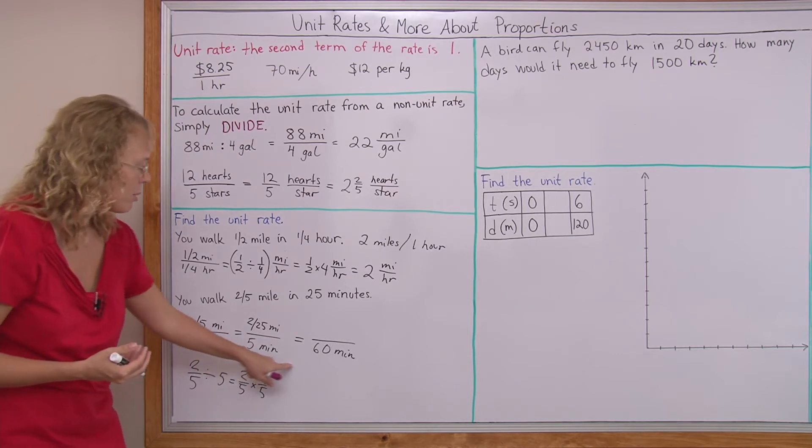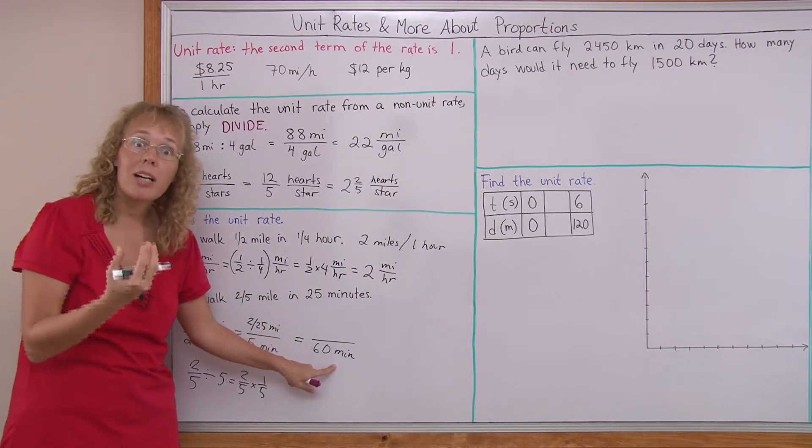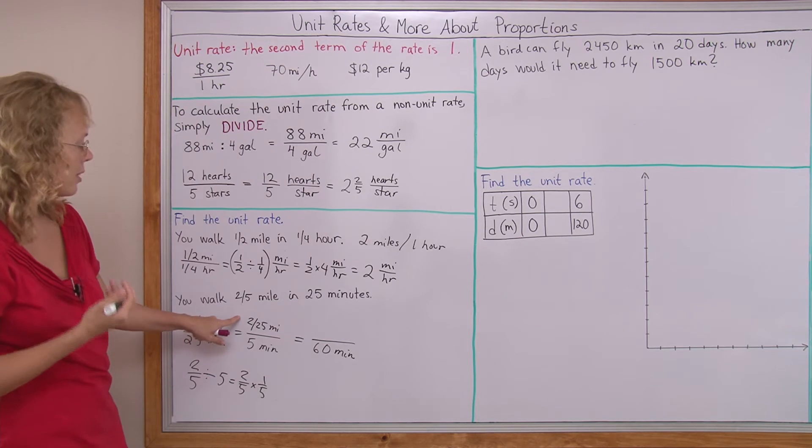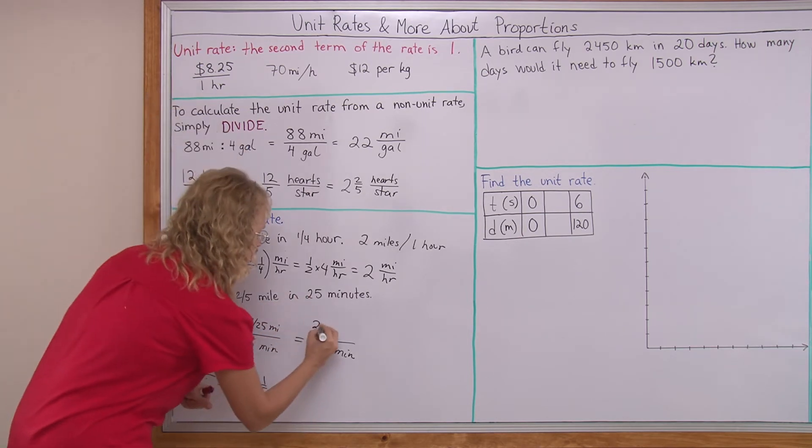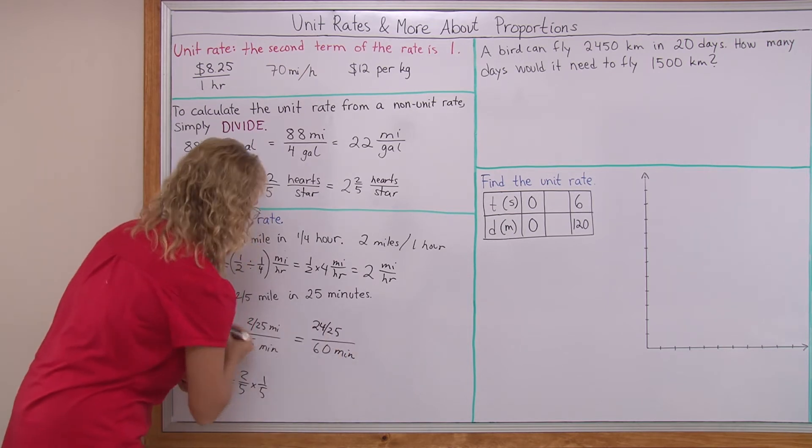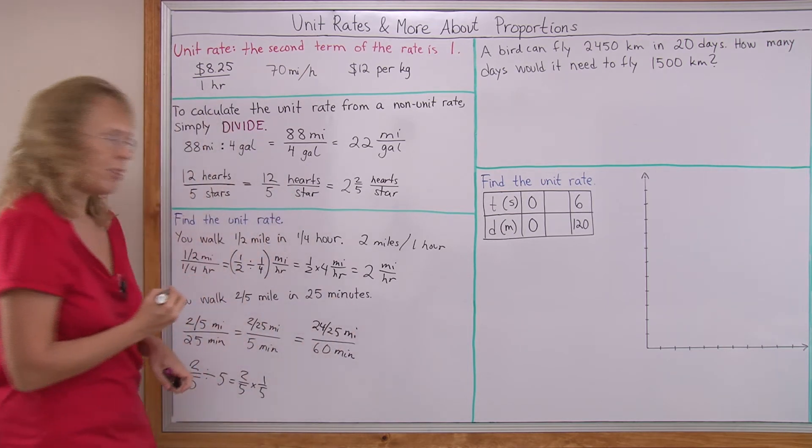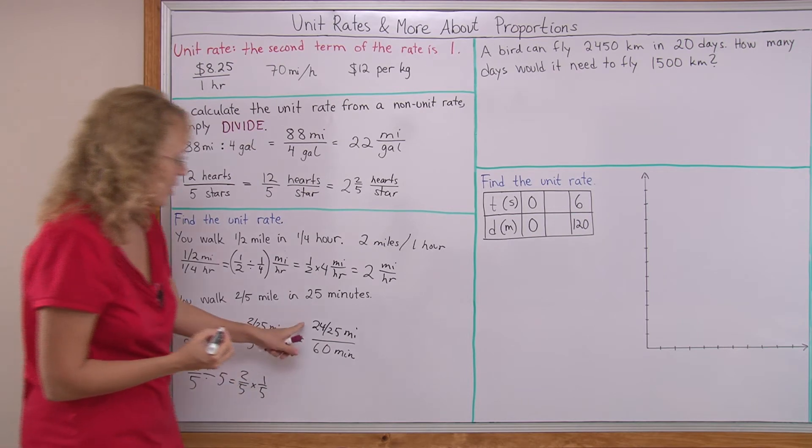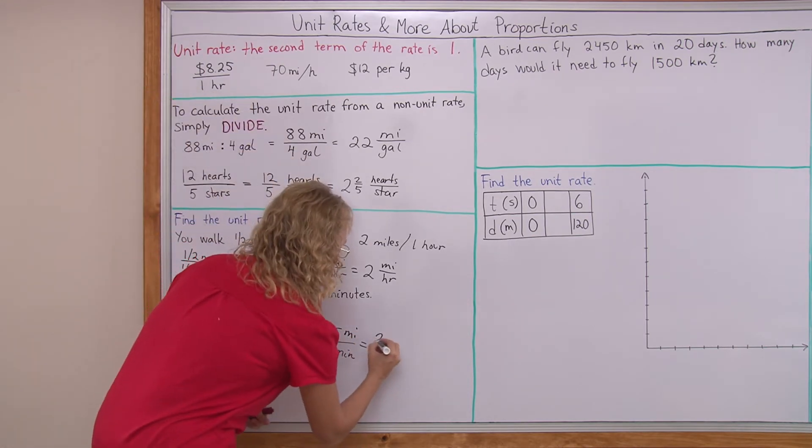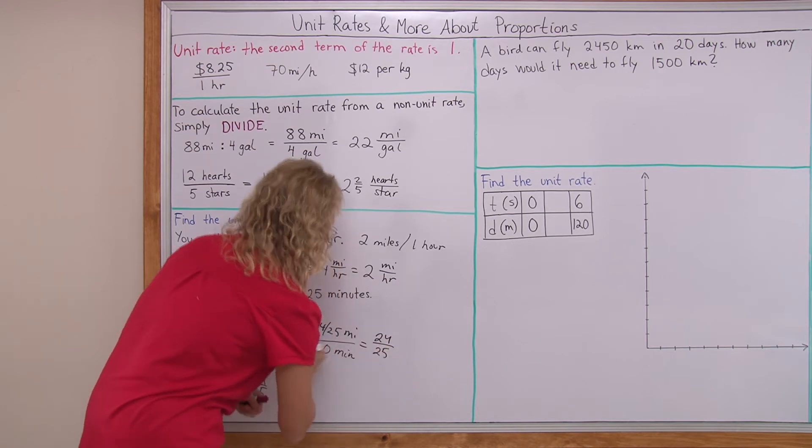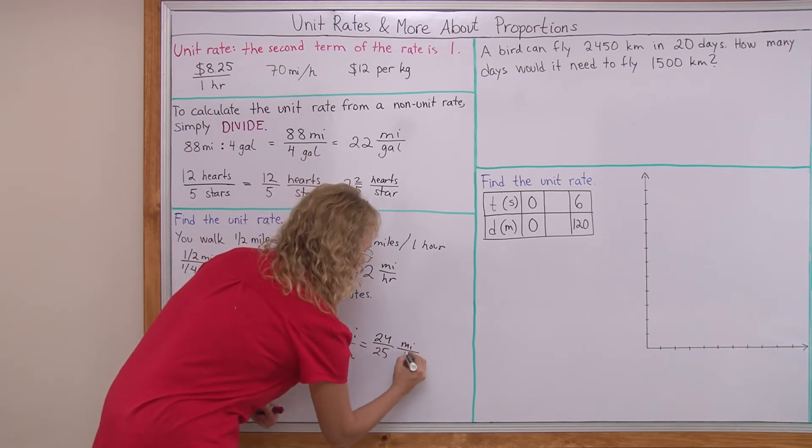And now, from here to here, I would multiply by 12, right? 12 times this number, 12 times this fraction. So I get 12 times two is 24, 24 over 25 miles per 60 minutes. So this is now the unit rate. 60 minutes is equal to one hour.